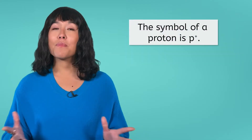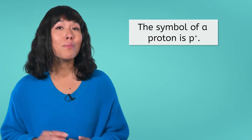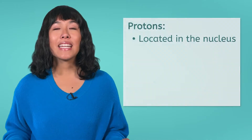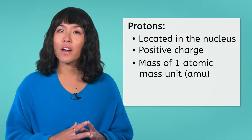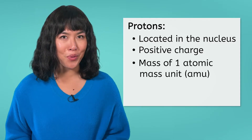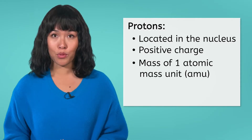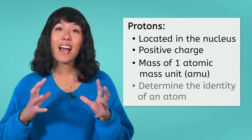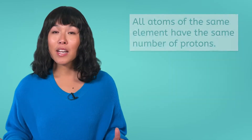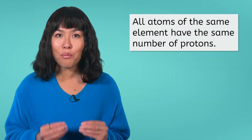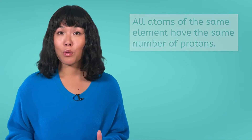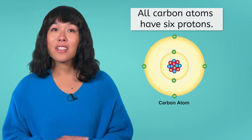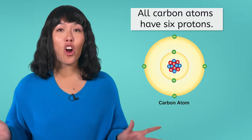We are going to start by discussing protons, which are symbolized with a lowercase p with a little plus sign on the top right. Located in the nucleus of the atom, protons have a positive charge and a mass of one atomic mass unit, or AMU. The most important thing to remember about protons is that they determine the identity of an atom. All atoms of the same element have the same number of protons — it will never change. For example, every atom that contains six protons is a carbon atom. If it does not have six protons, it can't be a carbon atom.